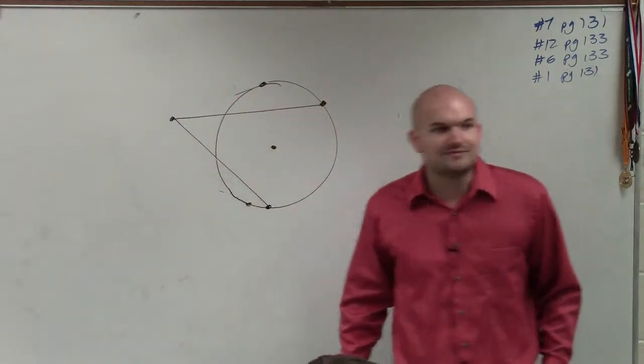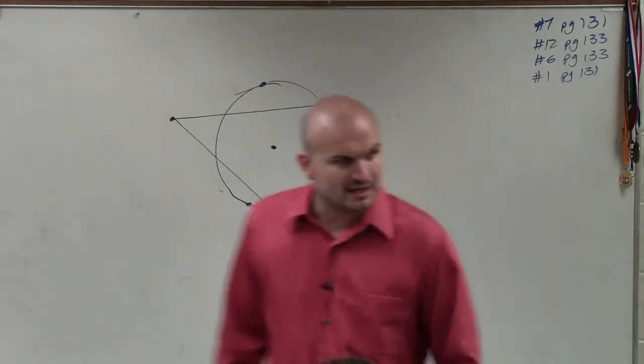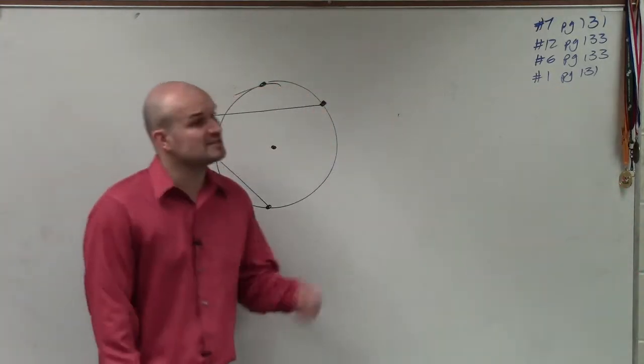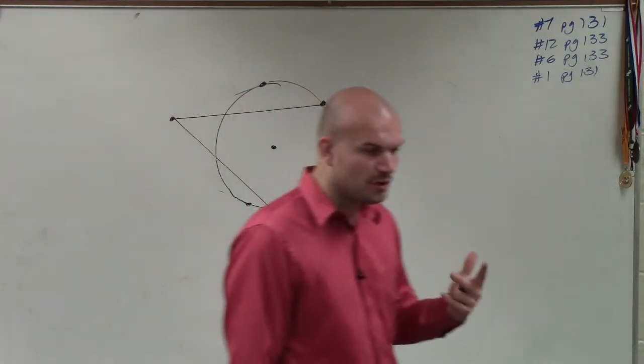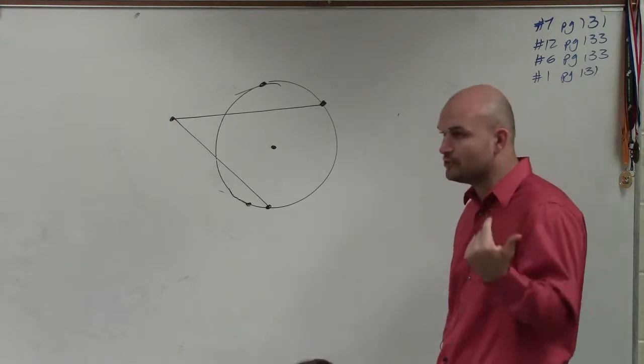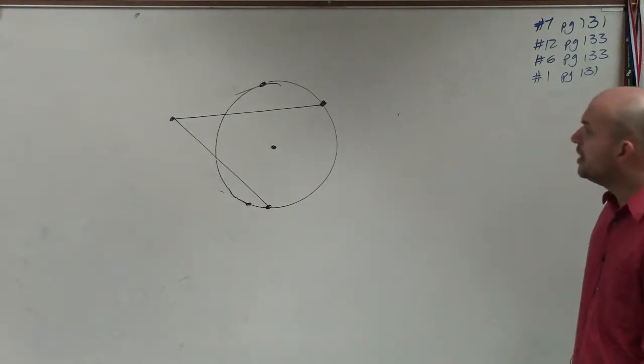So let's say we have two secant lines. Now, remember the difference between a secant line and a tangent line - a secant line crosses the circle twice, right? It's going to have two points, where a tangent only has one and is perpendicular to the circle.